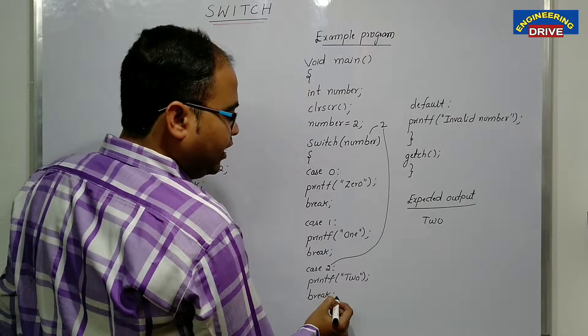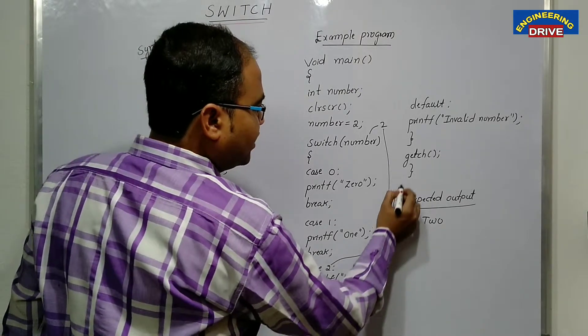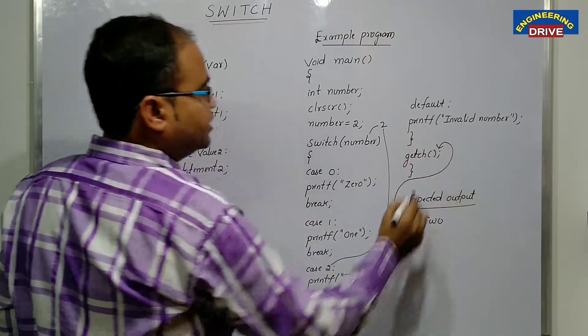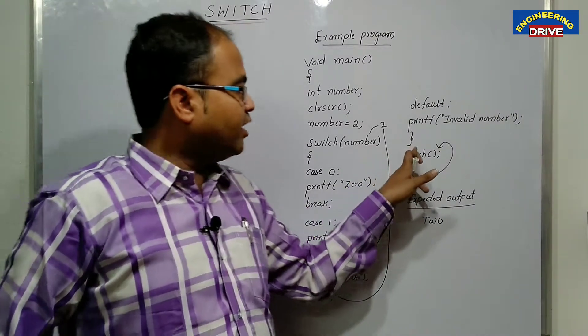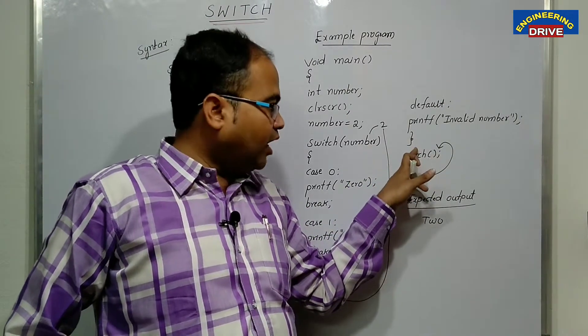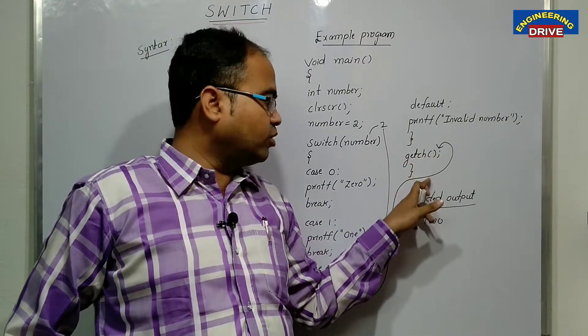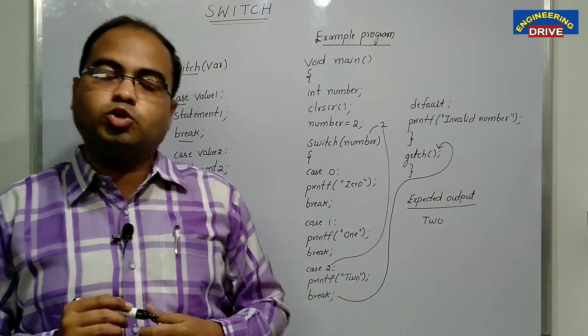And once it will display two, control will enter into break. And what break will do? It will take the program to GETCH. So what is the next line? Here the switch closes. After that line, we are having GETCH your program will close and only will get output two.